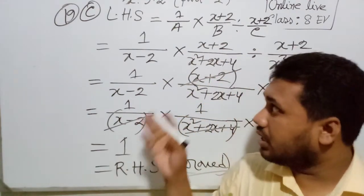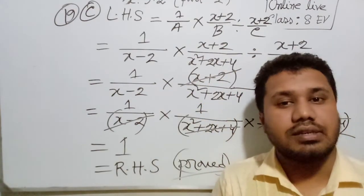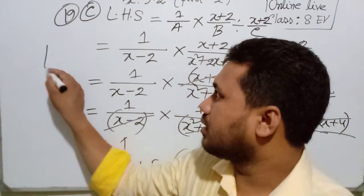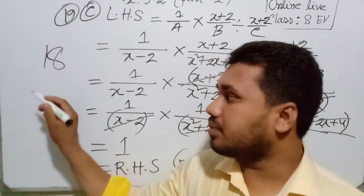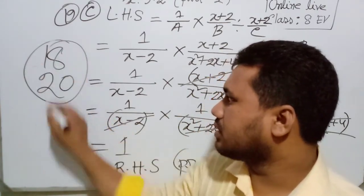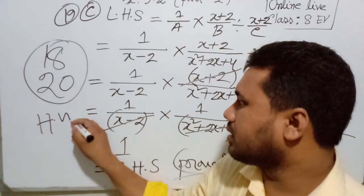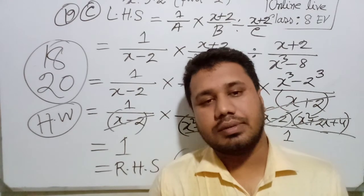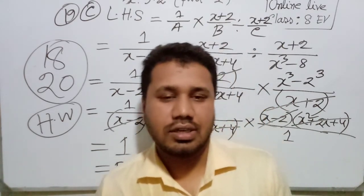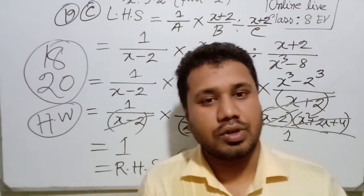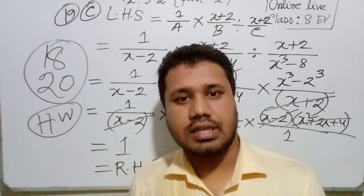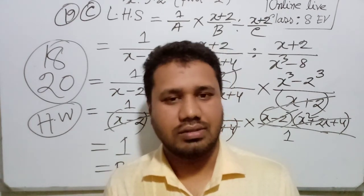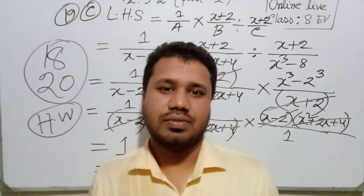So problems 17, 18, 19, and 20 are very important. Today we solved 17 and 19. Problems 18 and 20 are your homework — you will be able to solve them. We have completed Exercise 5.2. In the next class we will try Chapter 6, Exercise 6.1. Thank you, no more today.